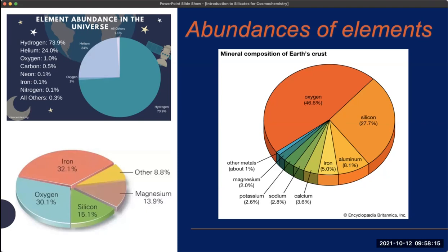But once we get to the whole Earth, we've got a composition where the Earth is actually mostly iron and oxygen, followed by magnesium, silicon, and then only about nine percent of the planet is made of other stuff.